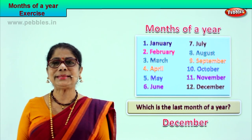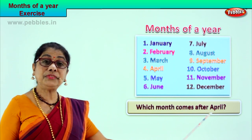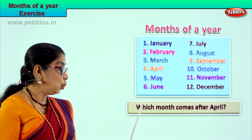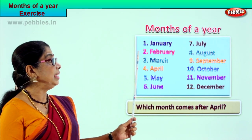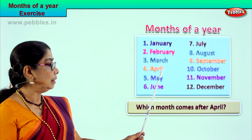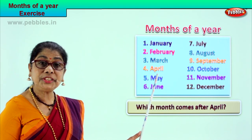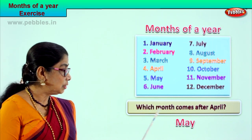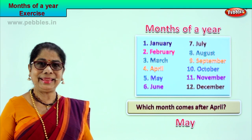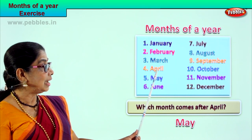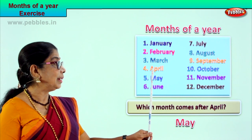Let's go to the next exercise. Read the question and find the answer: Which month comes after April? Let's go to the chart — January, February, March, April — then comes May. The question is which month comes after April? After April comes May. So the month of May comes after April. Which month comes after April? May. Good.